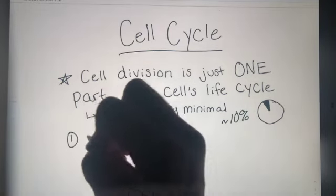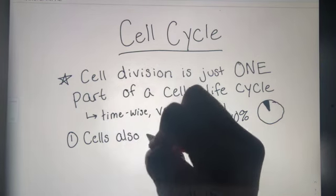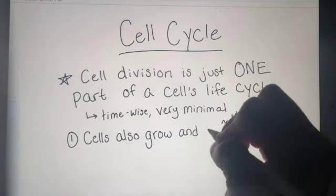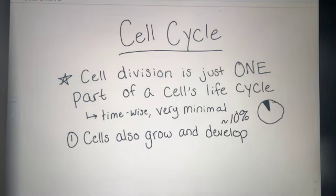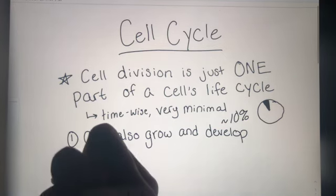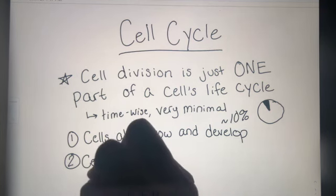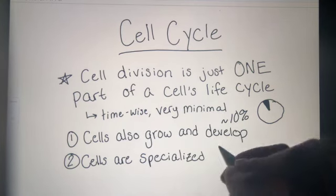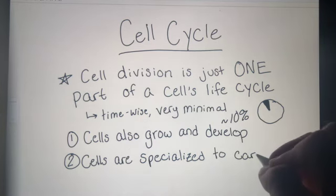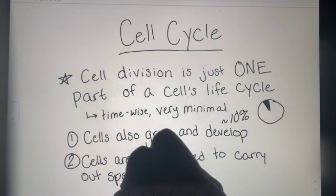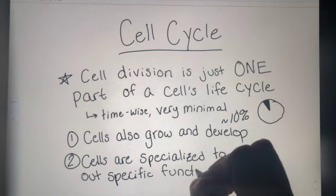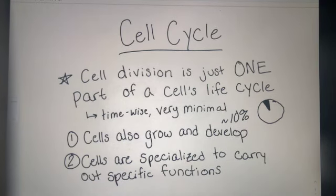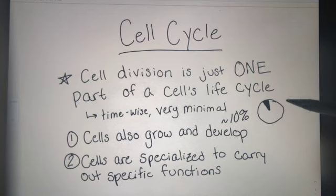We also have to remember that cells are responsible for a lot of other things. Cells, just like us, have to grow and develop. We don't spend all of our time making more of ourselves. Cells are also specialized to carry out very specific functions. For example, your liver cell cannot spend all of its time worried about making more liver cells — it has to help detoxify and do what the liver is supposed to do. Cells can't just worry about dividing and making more of themselves; that is a part of it, but it's not going to be the only part.